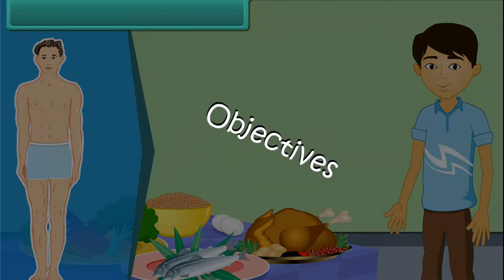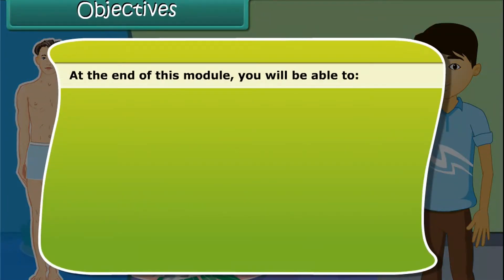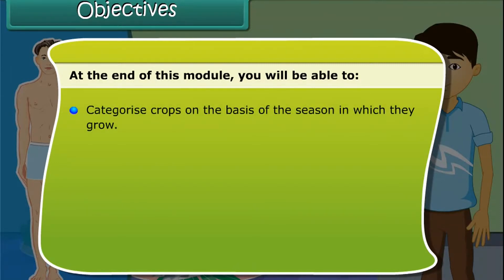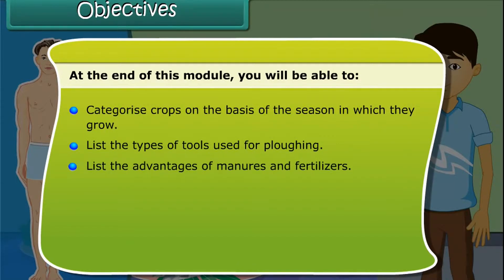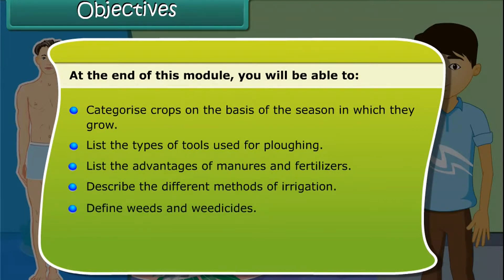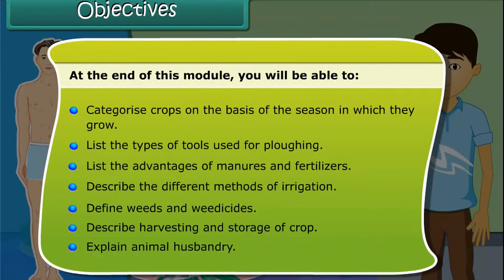Objectives. At the end of this module, you will be able to: categorize crops on the basis of seasons in which they grow; list the types of tools used for plowing; list the advantages of manure and fertilizers; describe the different methods of irrigation; define weeds and weedicides; describe harvesting and storage of crops; and explain animal husbandry.